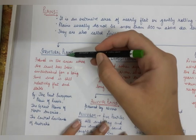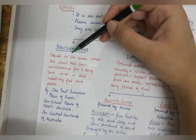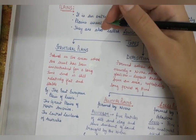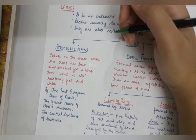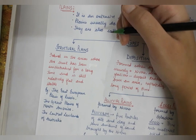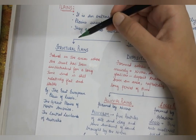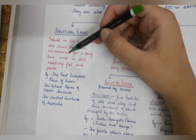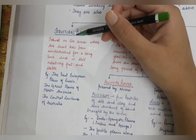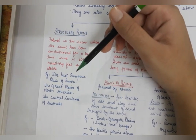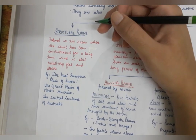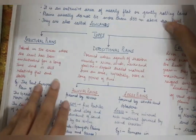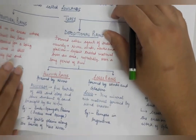There are three types of plains: structural, depositional, and erosional. Structural plains are formed in areas where the crust has not faced any disturbance from within, or has been left undisturbed for a long period of time. It is very flat, stable, and undisturbed. Examples are the East European Plain of Russia, the Great Plains of North America, and the Central Lowlands of Australia.